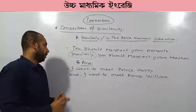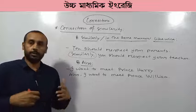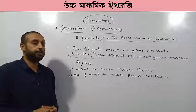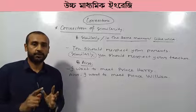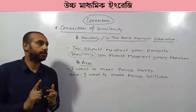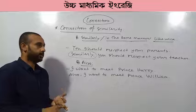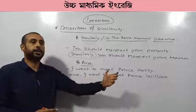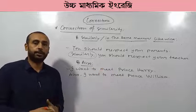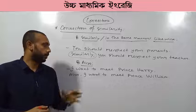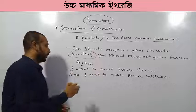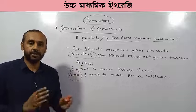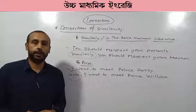Another connector for similarity is 'also.' Look at this example: 'I want to meet Prince Harry. Also, I want to meet Prince William.' There is a similarity between these two pieces of information — I want to meet both people. That's why we have used the connector of similarity, 'also.'